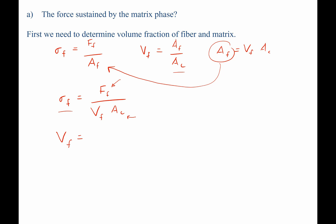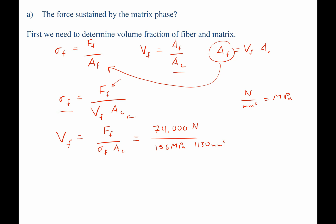The volume fraction of the fiber equals the force on the fiber divided by the stress on the fiber times the cross-sectional area of the entire composite. Plugging in values: 74,000 Newtons divided by 156 MPa times 1130 millimeters squared. Recall that a Newton per millimeter squared equals a megapascal — since 'mega' means times 10 to the sixth and converting millimeters squared to meters squared gives the same factor, they cancel. This gives a volume fraction of fiber of 0.4198.